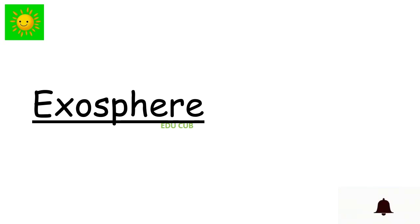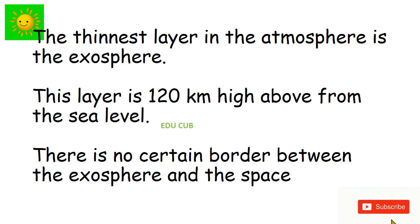Next layer is exosphere. The thinnest layer in the atmosphere is the exosphere. This layer is 120 km high from the sea level. There is no certain border between the exosphere and the space.